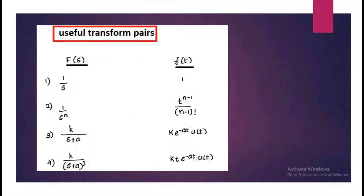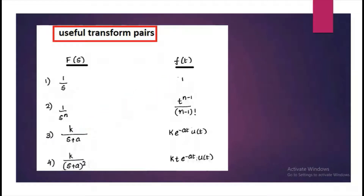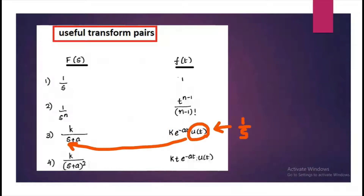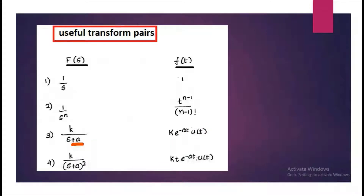If you have K divided by S plus A, where K is a constant, you can retain that term K, and for 1 by S you can write it as U of T. And since it is shifted by A, there will be an exponential term E raised to minus AT, by the shifting theorem.